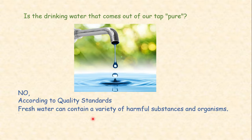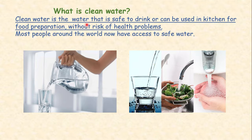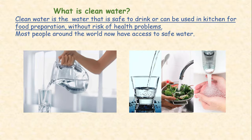So today's topic is: how to make water free from harmful substances and organisms — to make it suitable for drinking purpose. Clean water is the water that is safe to drink, suitable for drinking, and that we use in our kitchen for food preparation without the risk of health problems. Most people around the world now have access to safe water. A commonly known method is boiling — especially in monsoon season — to kill unwanted microorganisms which may cause waterborne diseases.